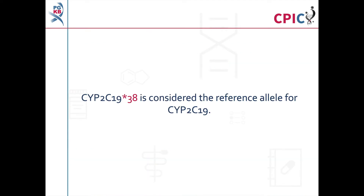It is important to know that the CYP2C19 star 38 allele was recently designated as the reference allele for CYP2C19 rather than star 1. CYP2C19 star 38 matches the REF sequence for CYP2C19, while star 1 and many other alleles contain an I331V amino acid change.